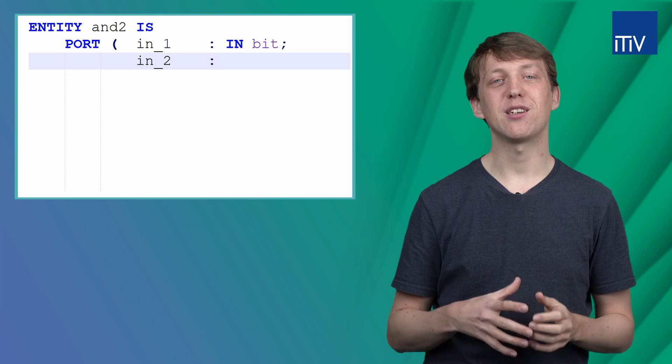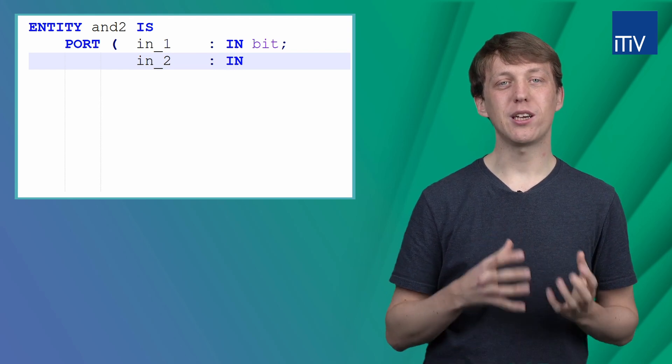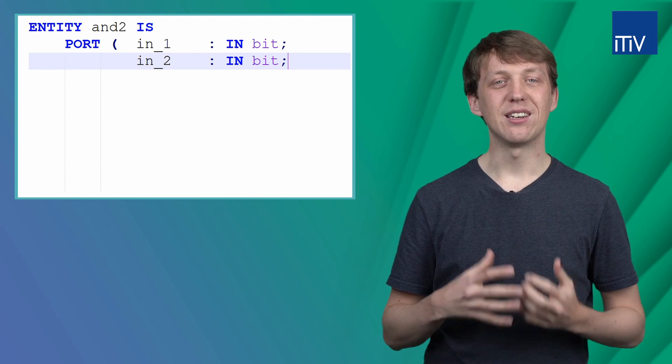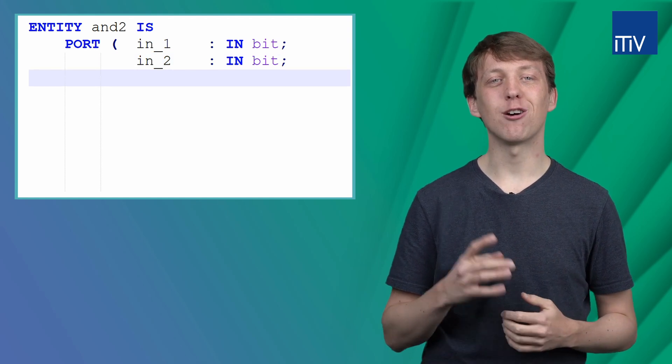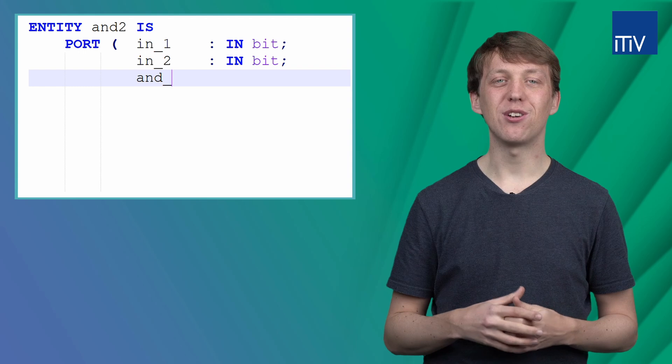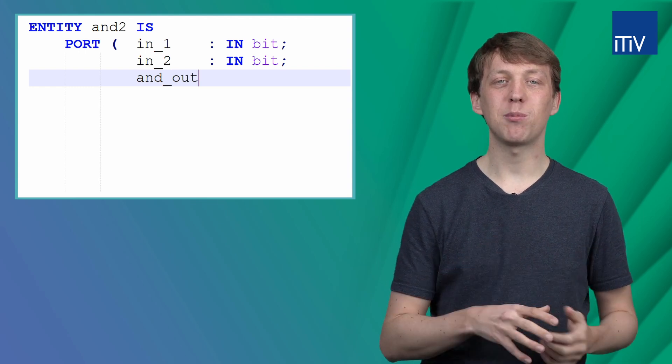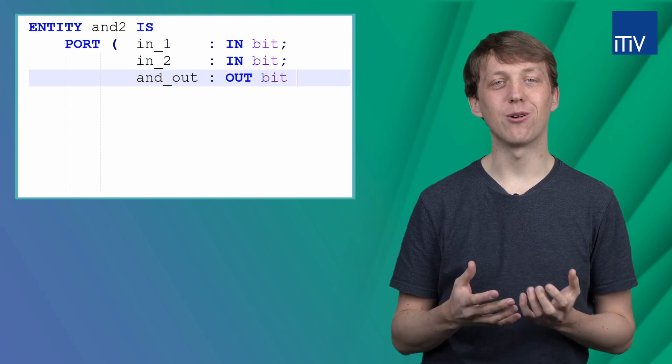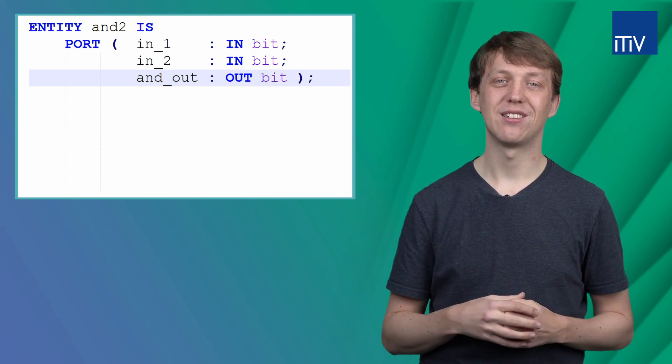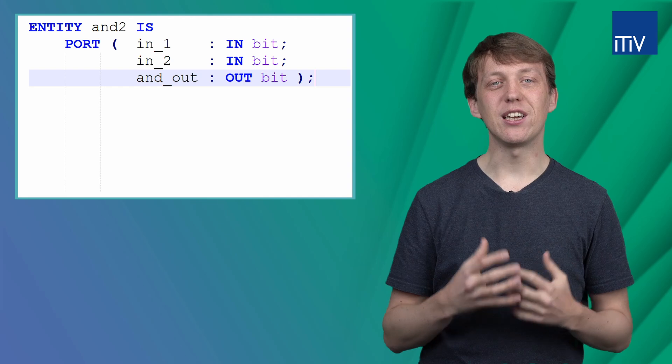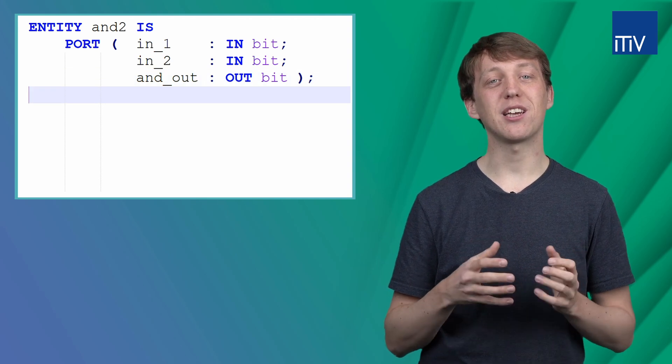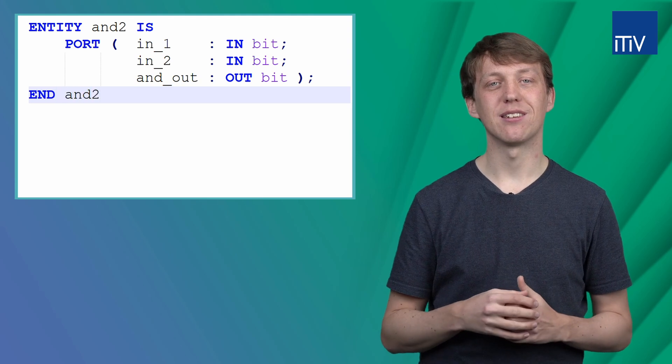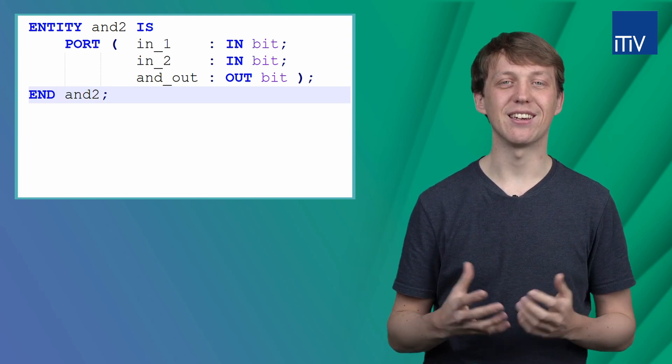The same way we defined the first input port, we can set the second input port in_2. Now we are only missing the output port. This one is also defined like the input port except that we have to use the keyword OUT instead of IN. The description of the interface is completed by the keyword END and again the name of the design. And don't forget the semicolon at the end.